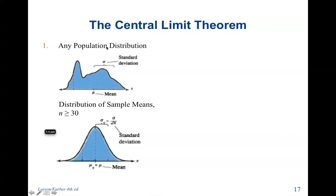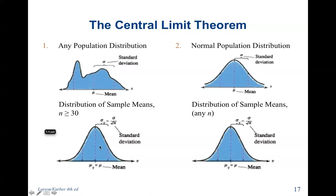Any population distribution will result in a distribution of sample means that is normal when n is greater than or equal to 30. And if the population is already normal, it continues to be normal — but a little taller and skinnier because the standard deviation is divided by the square root of n.